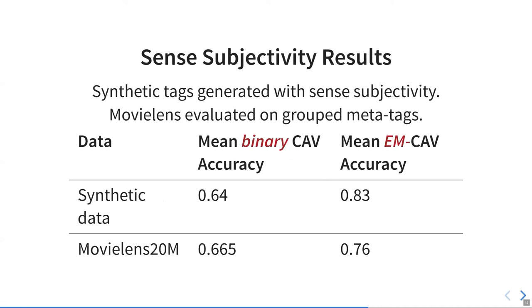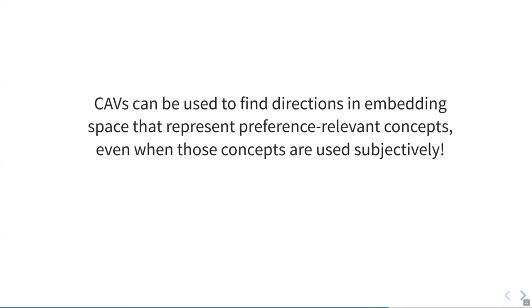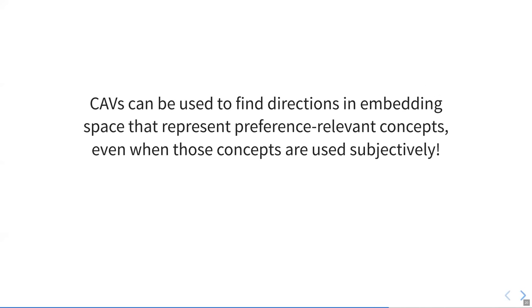For MovieLens data, we evaluate this by grouping several tags to meta tags to create one tag that can be used in different senses. We created four meta tags that are sense subjective, and our results are trained only on those meta tags, but we achieve much better accuracy using our expectation maximization CAV approach. So we can find directions in embedding space that represent preference relevant concepts, even when those are used subjectively. We're learning personalized semantics in embedding space.